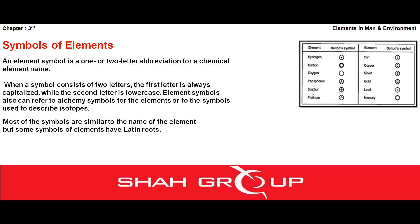Jaise ki Latin language mein sodium ko 'Natrium' kehte hain aur Natrium se uska symbol derive kiya gaya hai — Na. Yeh zaroorat isliye pesh aayi taaki hum ek element ko doosre element se alag kar sakein. Jaise agar sodium ka symbol bhi 'S' rakh lete to sulfur ka symbol bhi 'S' hota — then how do you know which symbol is for sulfur or sodium? So this is why we use another language such as English, Latin, or German to give elements their symbols.